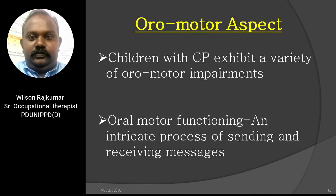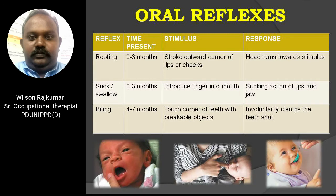Moving on to the oromotor aspect of cerebral palsy children. Children with cerebral palsy exhibit a variety of oromotor impairments that lead to difficulty in speech, swallowing, and communication. Oromotor functioning depends on an intricate process of sending and receiving messages to various facial, throat, and neck muscles to coordinate breathing, talking, chewing, swallowing, and digestion. Before looking at oromotor problems, we should review the reflexes which play a major role in helping the child to suck, swallow, bite, and chew.